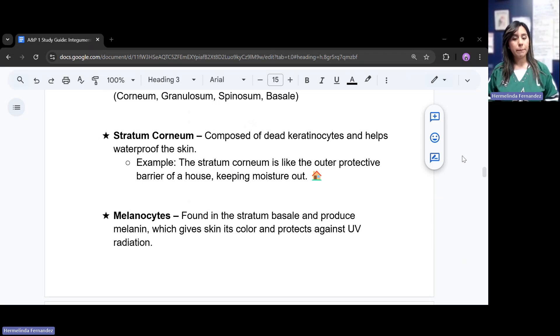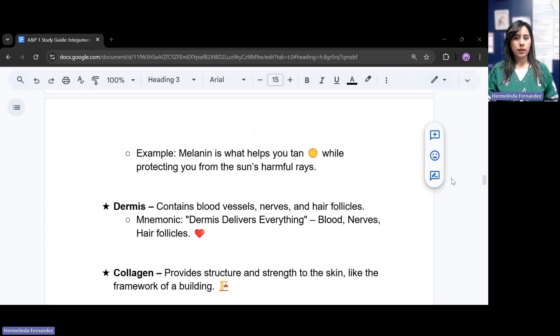Then we have melanocytes. This is found in the stratum basali and it produces that melanin. This is what gives the skin color and protects against that UV radiation. So an example for this would be the melanin is what helps us tan while protecting us from the sun's harmful rays.